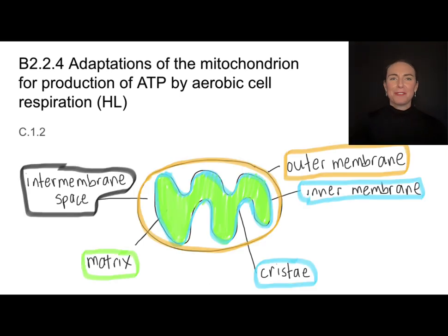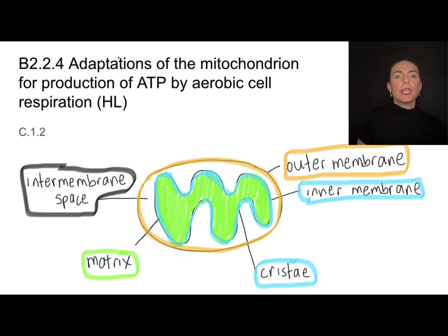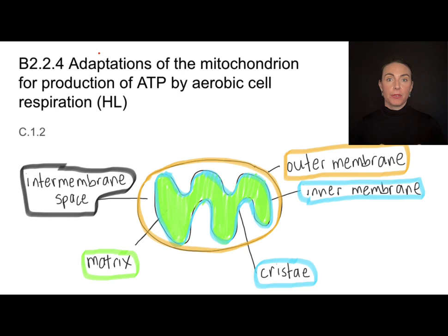I've tried to color code this a bit to make it easier to see. I've left the intermembrane space white, just so you're aware. So these are the adaptations — that's the form, this is the structure. How do each of these contribute to the function of the mitochondria?